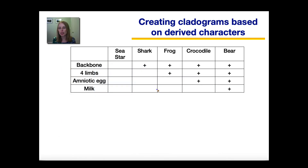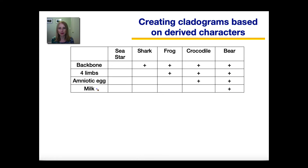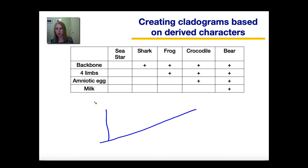To draw a cladogram, you will be given a group of species and information about which characteristics are present or absent. You could be given a table like this one, where the pluses indicate the presence of a characteristic. For example, the backbone is present in all of them except the C-star. But the bear is the only one that has all of these characteristics, including the presence of milk. One way to begin drawing the cladogram is to draw a line, starting with the C-star as our outgroup — the one that's the most different — and draw a line indicating the lineage that led to C-stars.